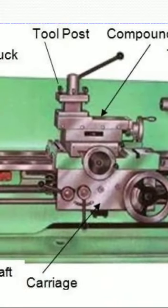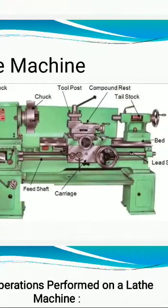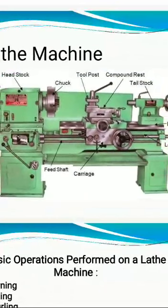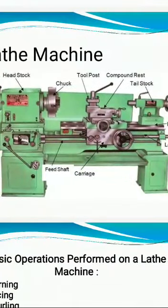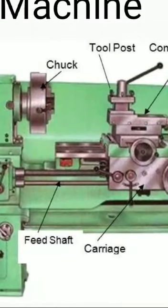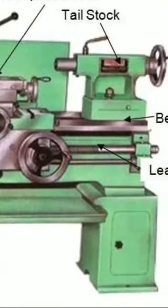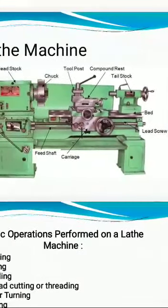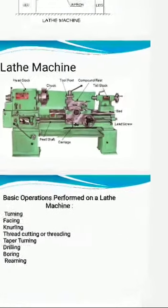We call this the tool post. Tool post means it holds the tool. And this is the carriage assembly. The carriage can move from right side to left side. Our aim is to remove material from the workpiece. The workpiece: one end is placed in the headstock chuck, and the other end sits in the tailstock. Now the workpiece is ready for operation. When you switch on the machine, the workpiece rotates with its own axis. This is, in general, the lathe machine operation.